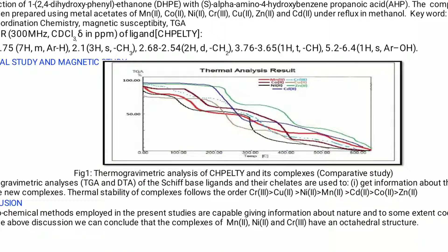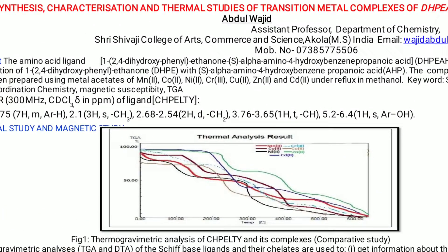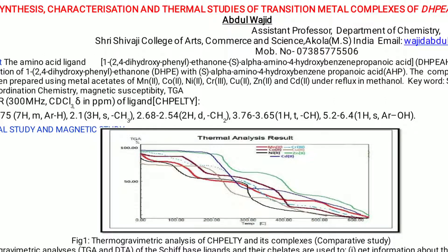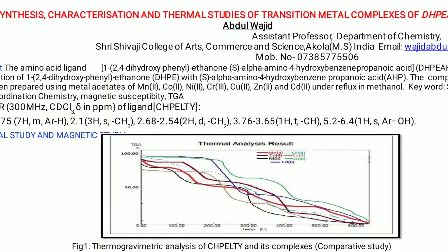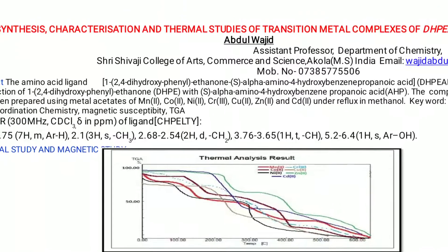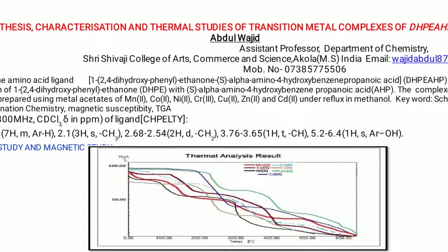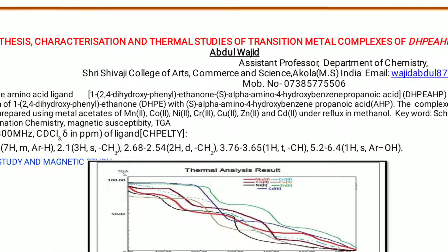The octahedral structure of these complexes can be confirmed by certain magnetic susceptibility data. In this way we can conclude that thermal analysis is one of the important studies with respect to coordination complexes, and by observing the thermogravimetric analysis we can decide the stability of particular complexes. This is one of the important studies with respect to coordination compounds. Thank you very much.